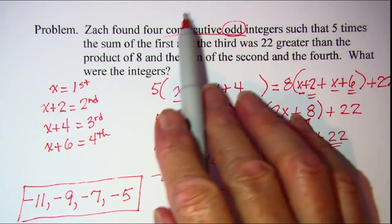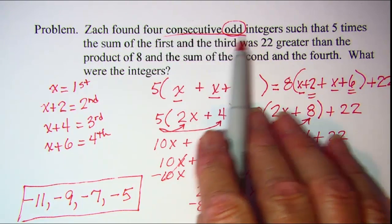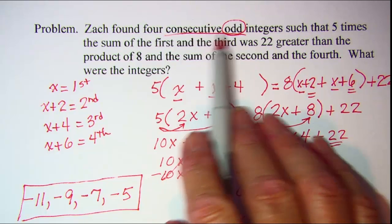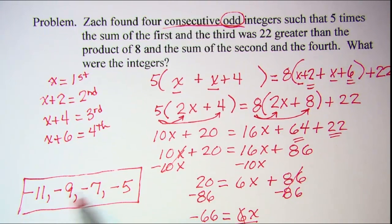So these are my consecutive odd integers. And it didn't say anything about them having to be positive or anything. So consecutive odd integers. And there they are.